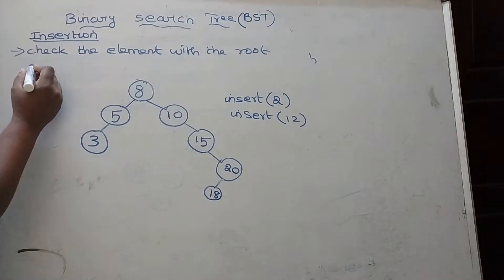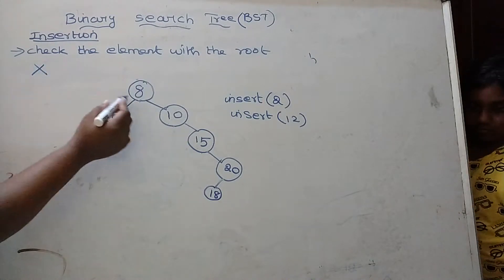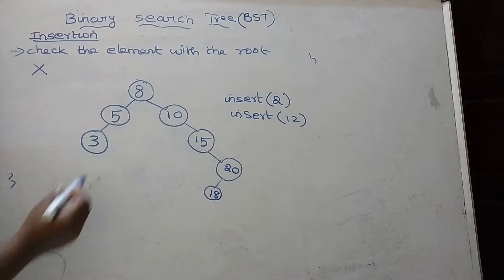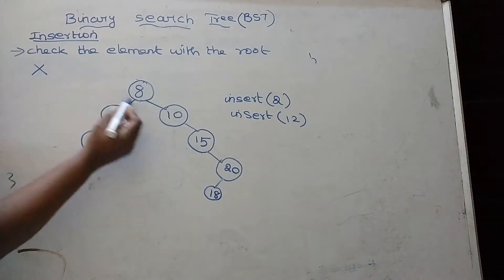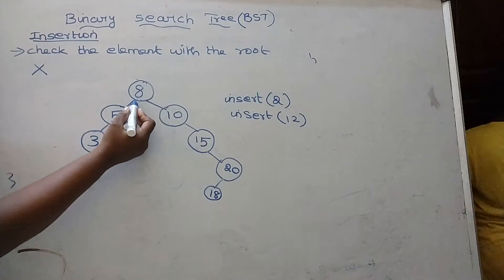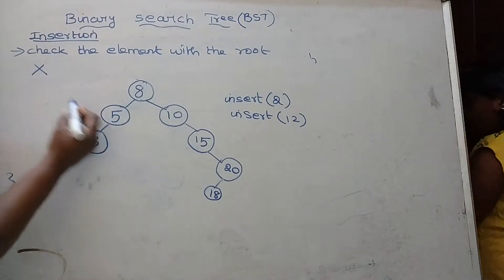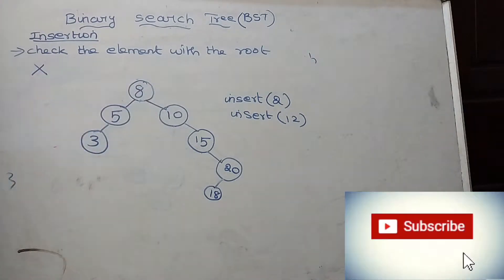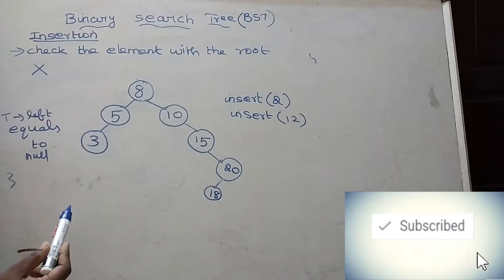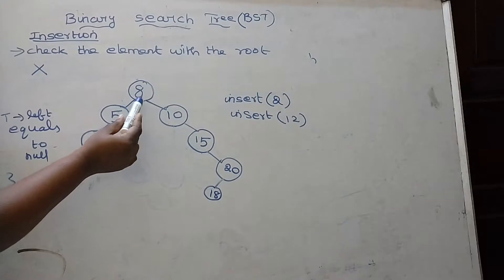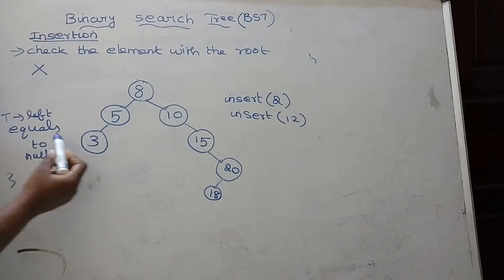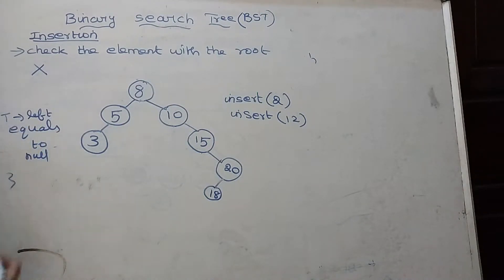For example, we are going to insert element X into this binary search tree. X is compared with the root. If X is lesser than the root, we have to traverse the left side. If X is greater than the root, we have to traverse the right side. If X is less than the root, traverse the left subtree until T of left equals null.